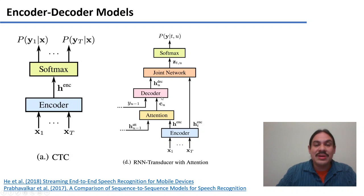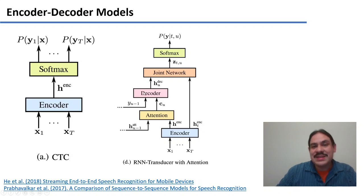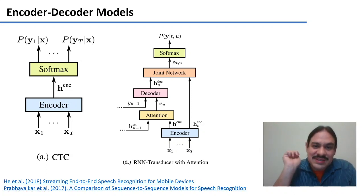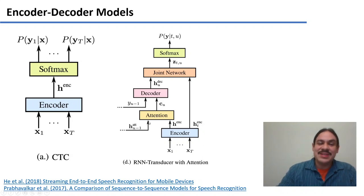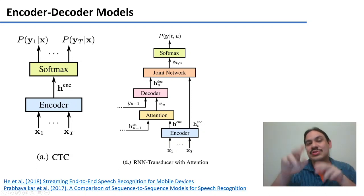A second approach is to use encoder-decoders. This example architecture encodes the audio features, pays attention to the words it has predicted before, and also uses a decoder for those previously predicted words. It uses all of these inputs to provide a candidate for the orthographic symbol at that moment of the spectrographic signal. So you take the spectrographic signal, attend to the words before, and decode to try to predict what orthographic symbol should come next.